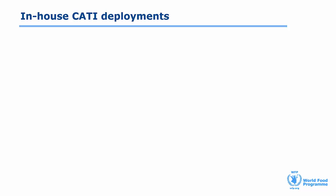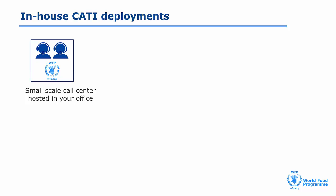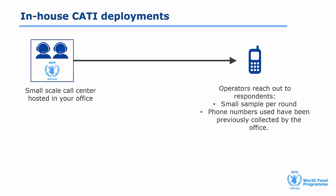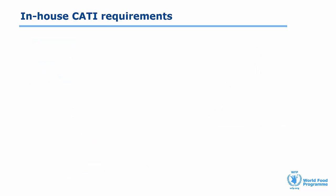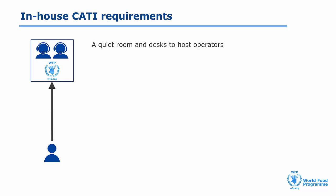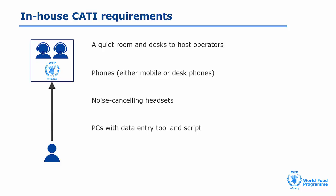Now let's look in more depth at how in-house CATI deployments work. If you go for an in-house deployment you need to set up a call centre in your office. Usually for MVAM projects there are two phone operators employed, so we normally get a small sample size. Phone operators will reach respondents using your already existing phone numbers database, and data is entered by the operators in a data entry tool. The requirements include a quiet room and desks, phones (mobile or desk), headsets with noise-cancelling technology, a PC for each operator with the script and data entry tool, and supervision and standard operating procedures. More information on setting up in-house CATI deployments, including standard operating procedures and terms of references, is available in the relevant supporting document.